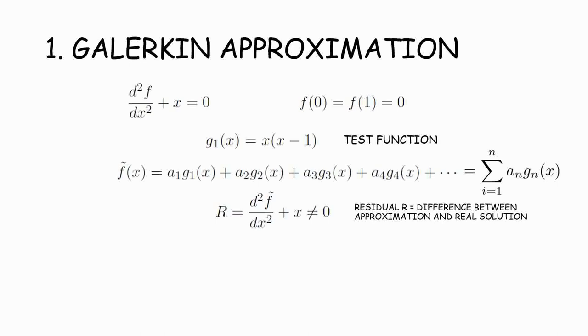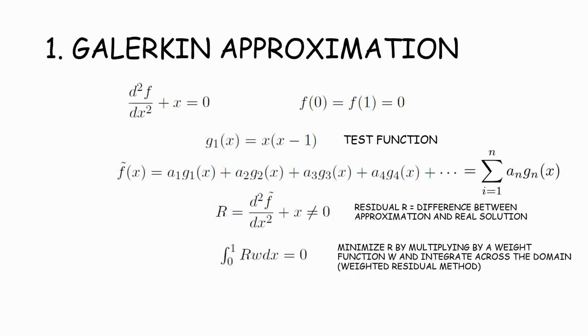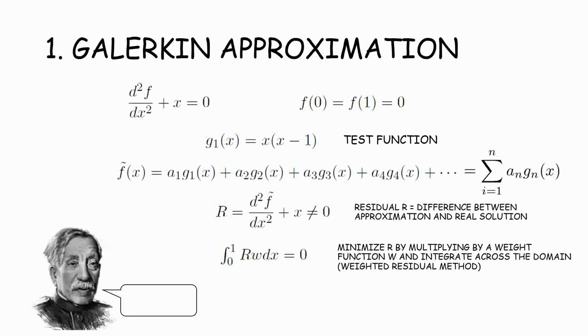Then we take what is called the residual. That is f minus f tilde, which turns out to be the same as plugging f tilde into the original equation. It turns out if you multiply it with the weight function w and set the whole integral equal to zero, you'll get a very good approximation to f by solving for alpha. So what is w? Well, that's where Galerkin comes in, and Galerkin said w is equal to g.